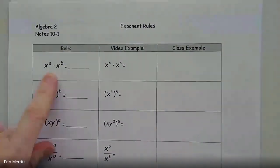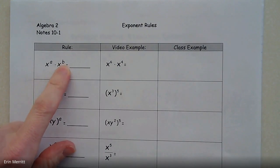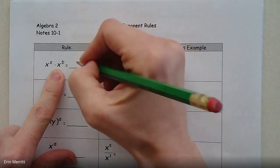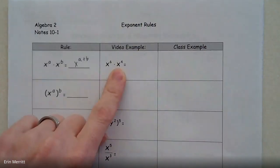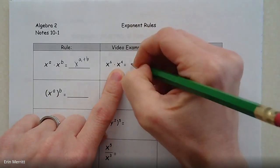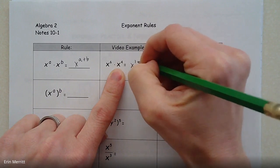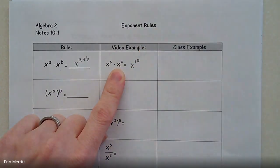So first up, x to the a power times x to the b power. As long as you have the same base, we are just adding the exponents. So if we have x to the 6 times x to the 4th, that would simply just be x to the 10, because that's what 6 plus 4 is.